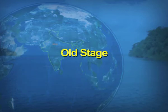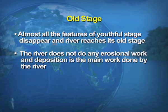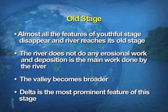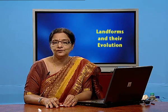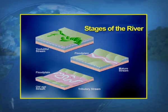In the old stage of the river, almost all the features of the youthful stage disappear. The effectiveness of the river is very less. The river does not do much erosional work and deposition is the main work done. The valleys formed become broader and delta is the important feature formed in the old stage. You can view the different three stages of the river on screen.